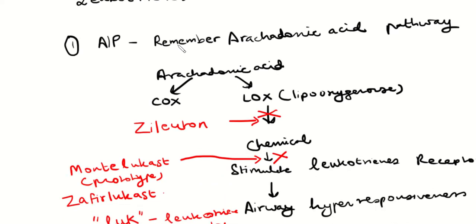With arachidonic acid, and actually with glucocorticoids, we can prevent it from happening. But with arachidonic acid, it can go into the COX pathway or the LOX pathway, which is a lipooxygenase pathway.